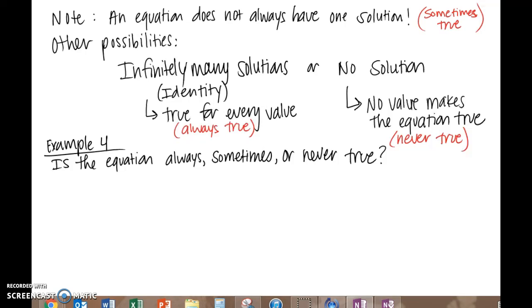Example 4 asks us to find if the equation is always, sometimes, or never true. Above, I wrote in red to show you that when the equation has one solution, that means that the equation is sometimes true. When the equation has infinitely many solutions, then that is always true. And if there is no solution for the equation, then it is never true.